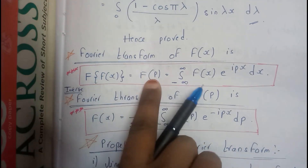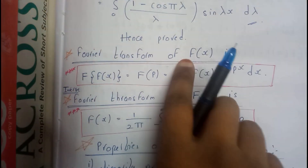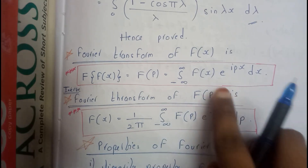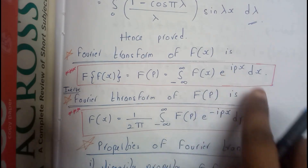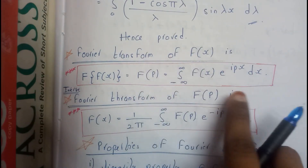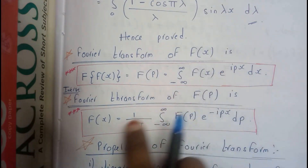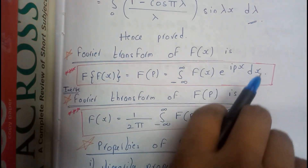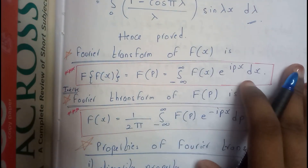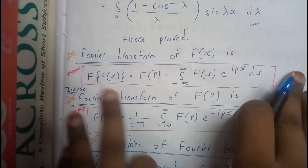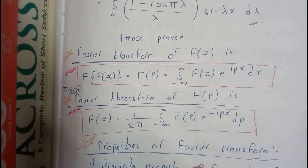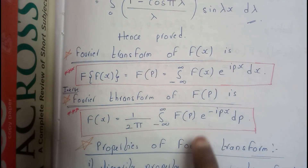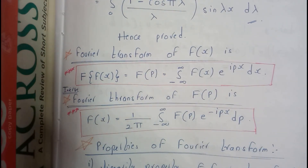Capital F of p equals integral from minus infinity to infinity of f of x times e to the power ipx dx. The Fourier transform will be positive and the inverse Fourier transform will be negative in mathematics and statistics, whereas in signal and system analysis it's the opposite — here it will be negative and there it will be positive. That's the only difference.